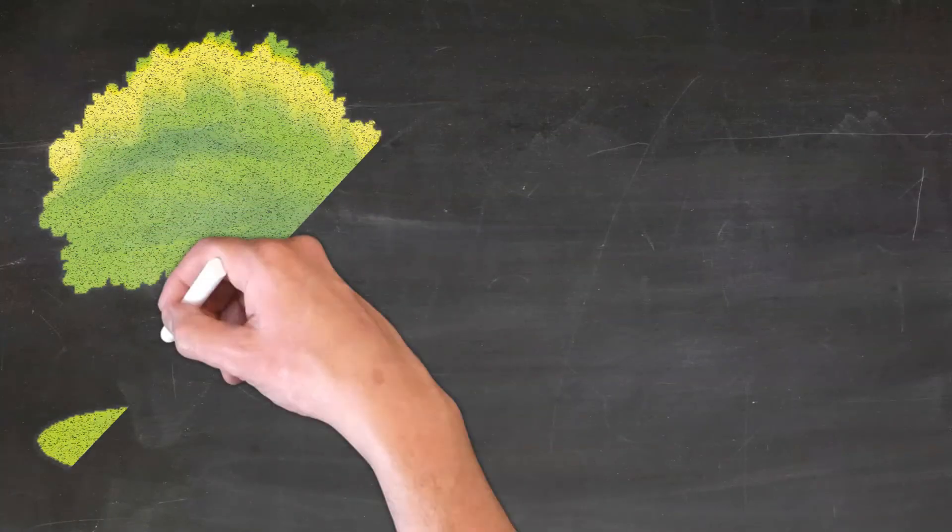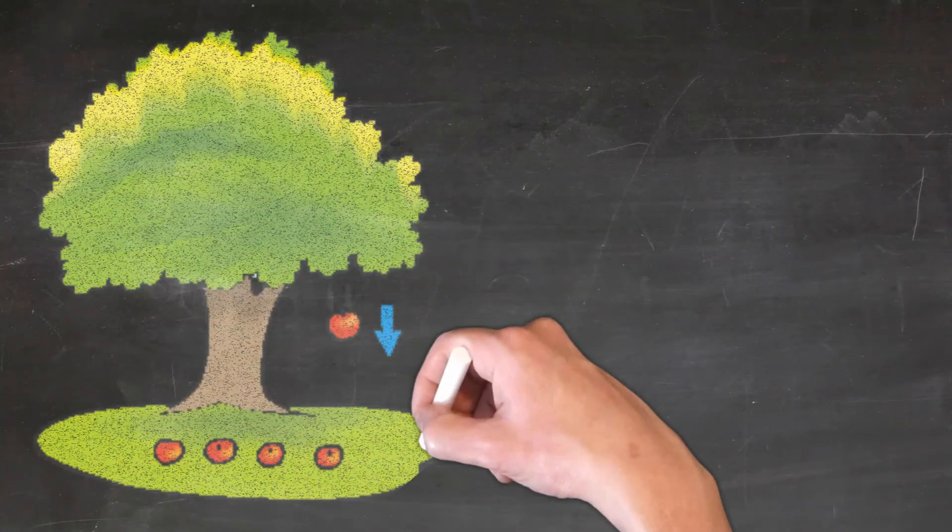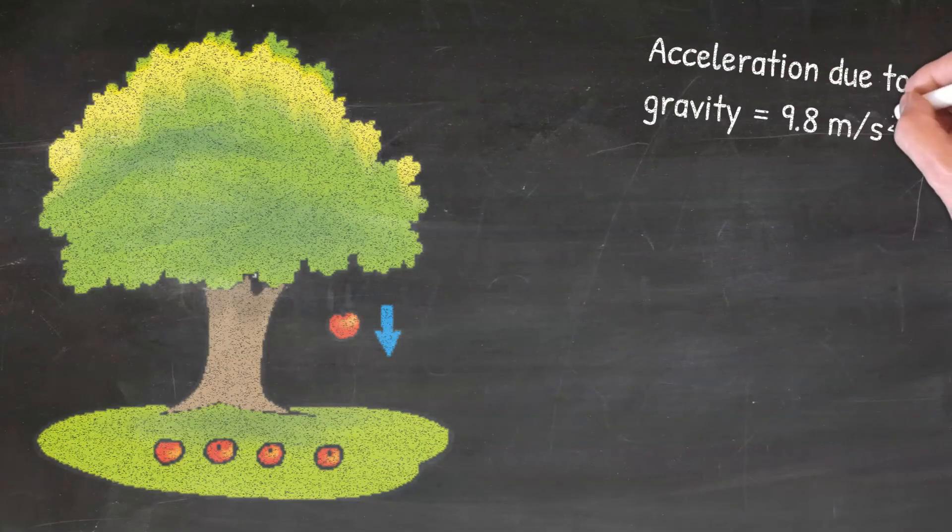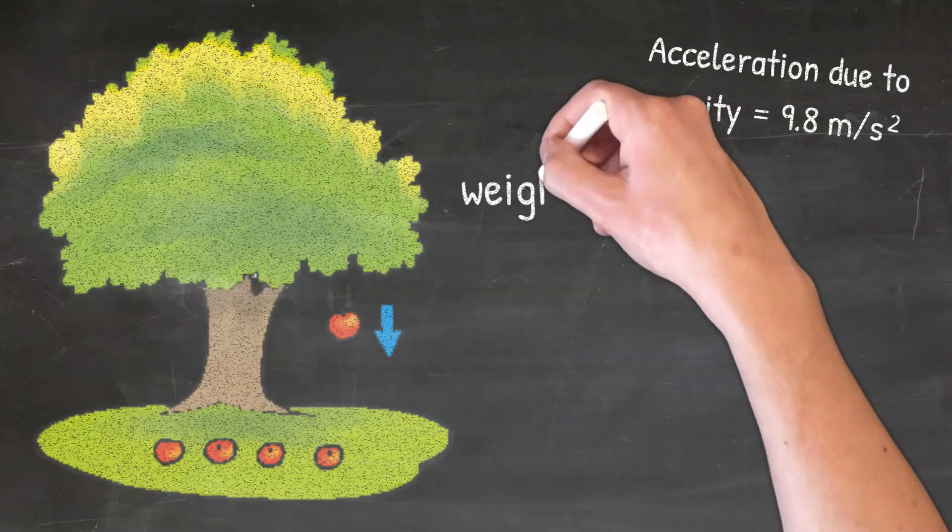We talked in our forces video about gravity and the acceleration due to gravity. Remember that gravity is just a force that pulls us towards the Earth. We mentioned that the acceleration due to gravity is 9.8 meters per second squared. This number will be important when solving for the weight of an object.